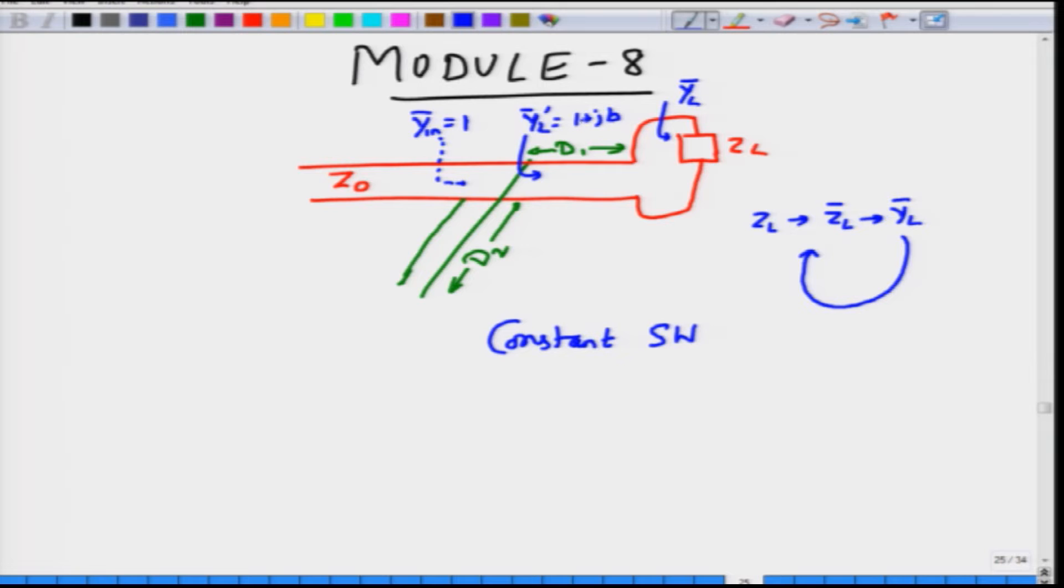B could be positive or negative, it does not matter. I am just writing it as 1 plus JB. It could equally be 1 minus JB, when B is negative. What you found was starting from YL to move to YL bar.